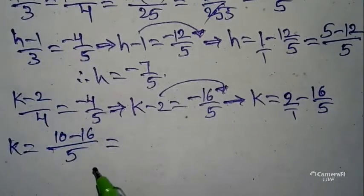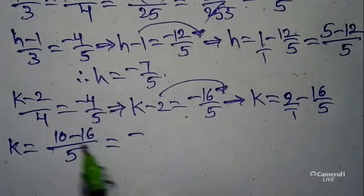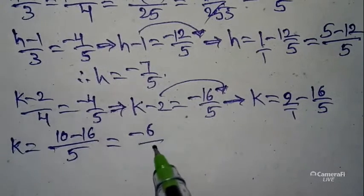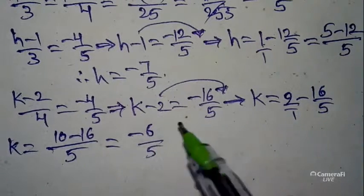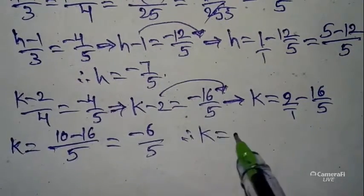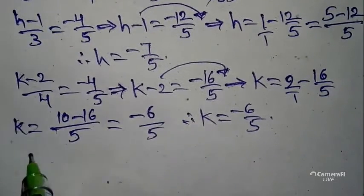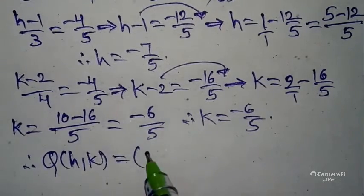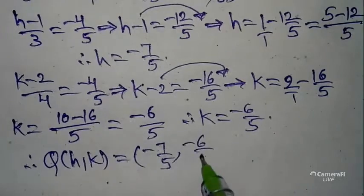Converting 2 = 2/1, taking LCM 5: k = -16/5 + 10/5 = (10 - 16)/5 = -6/5. Therefore the image Q(h,k) = (-7/5, -6/5) is our required answer.